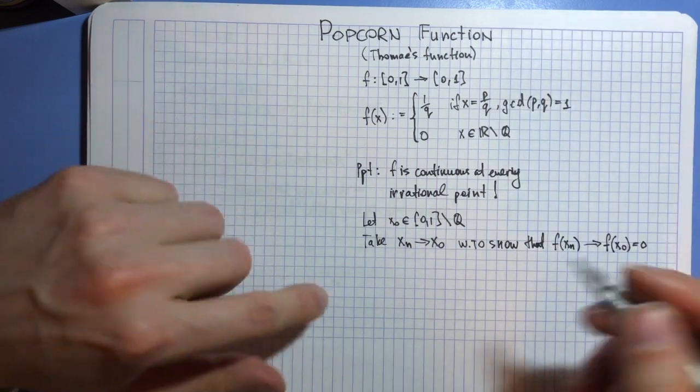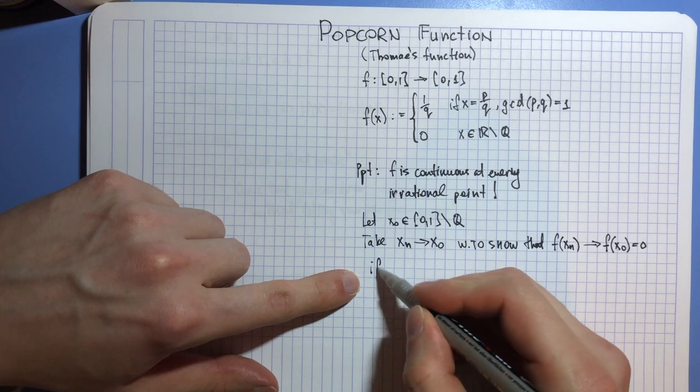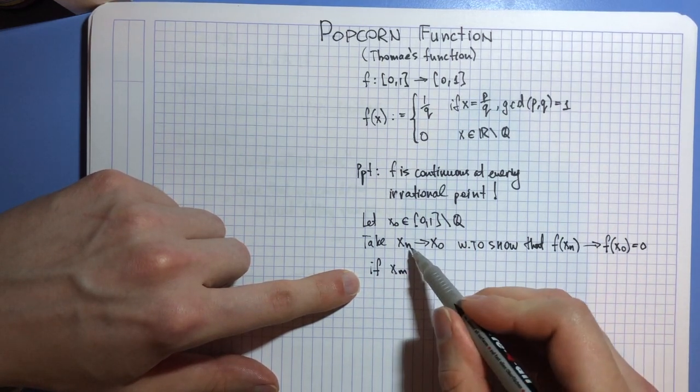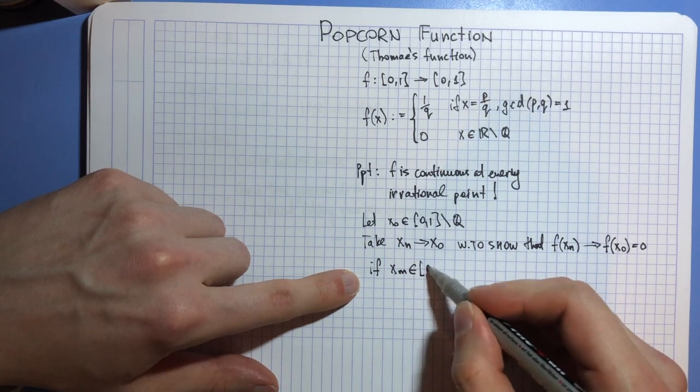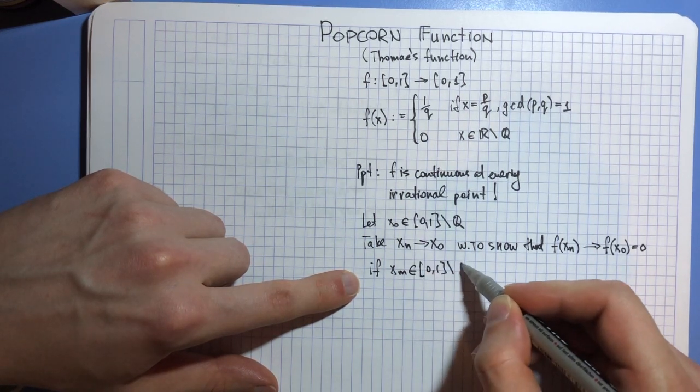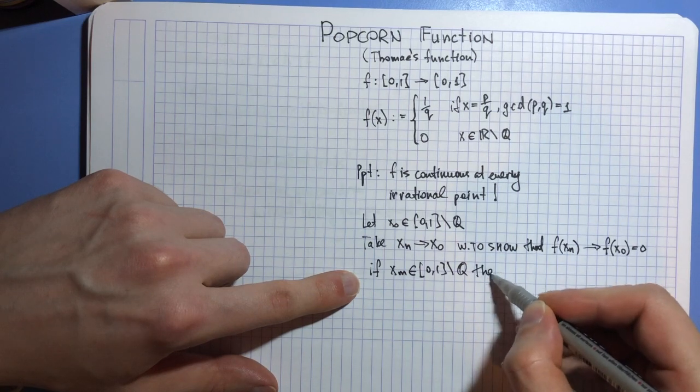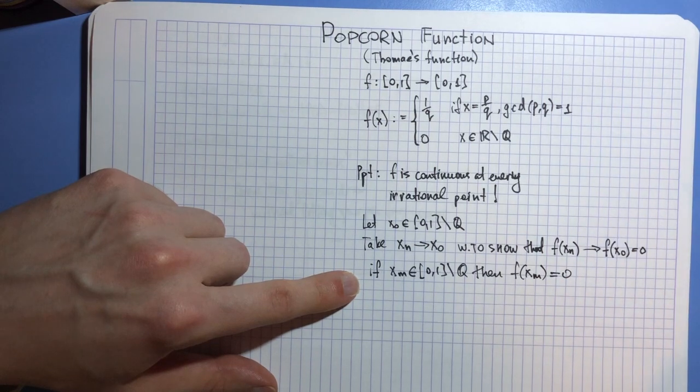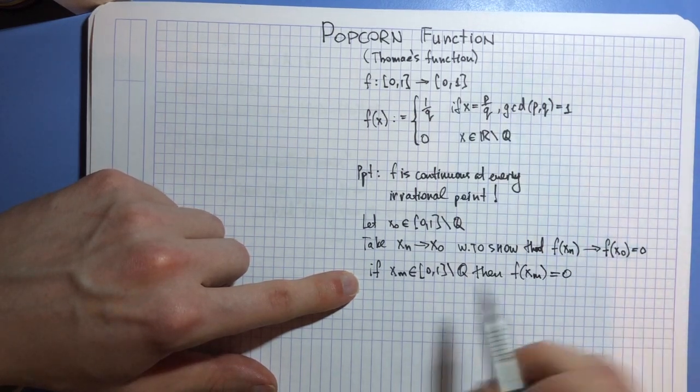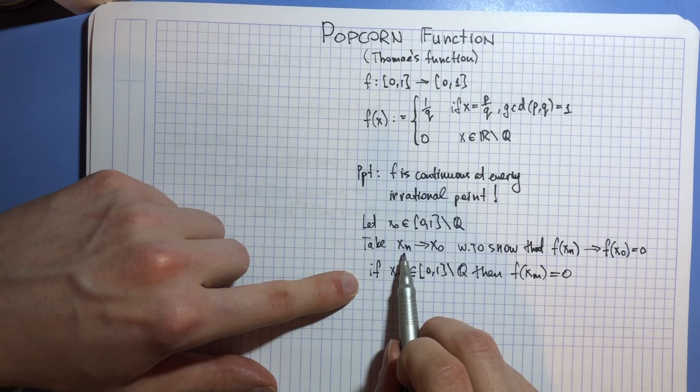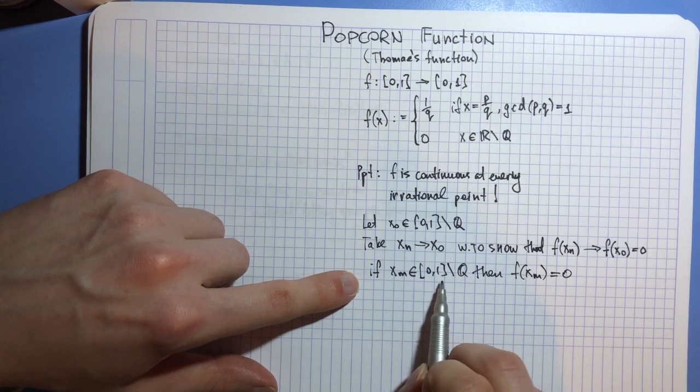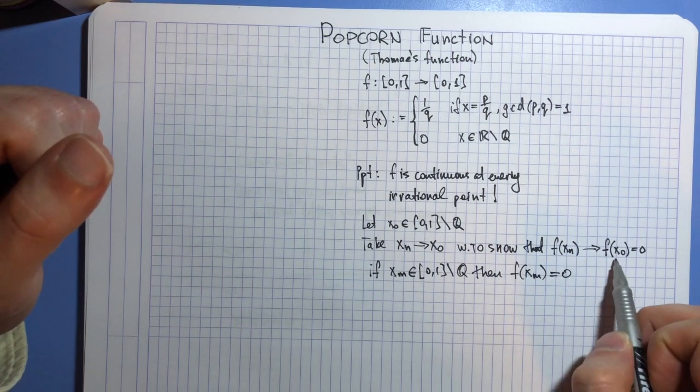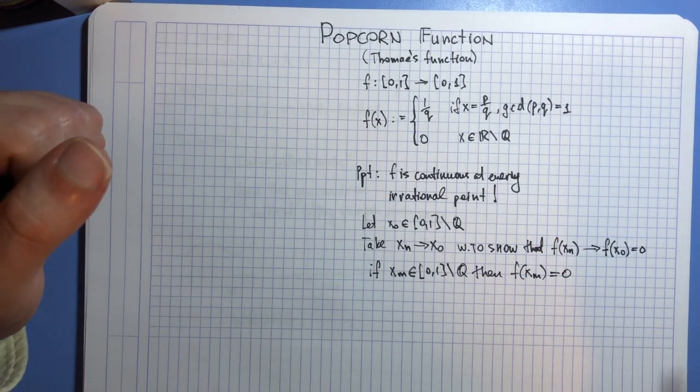What can we do? If xₘ, some term of our sequence, is irrational, then we know that the functional value at that point is zero. If it so happens that our sequence consists solely of irrational points then we are done. It's always zero so it tends to zero.